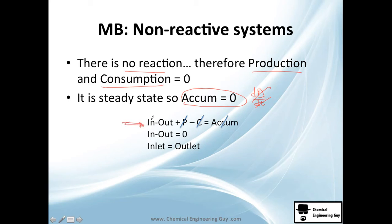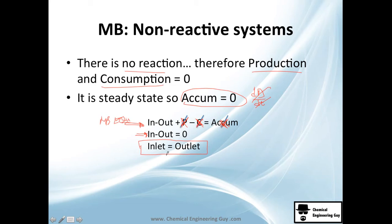Let me show you mathematically how the equation reduces to inlet equals outlet. From the general mass balance: inlet minus outlet plus production minus consumption equals accumulation. Since there is no chemical reaction, production equals zero and consumption equals zero. Since it is steady state, accumulation is also zero. We're left with inlet minus outlet equals zero, which means inlet equals outlet — obvious, because if nothing accumulates, everything that comes in must go out.